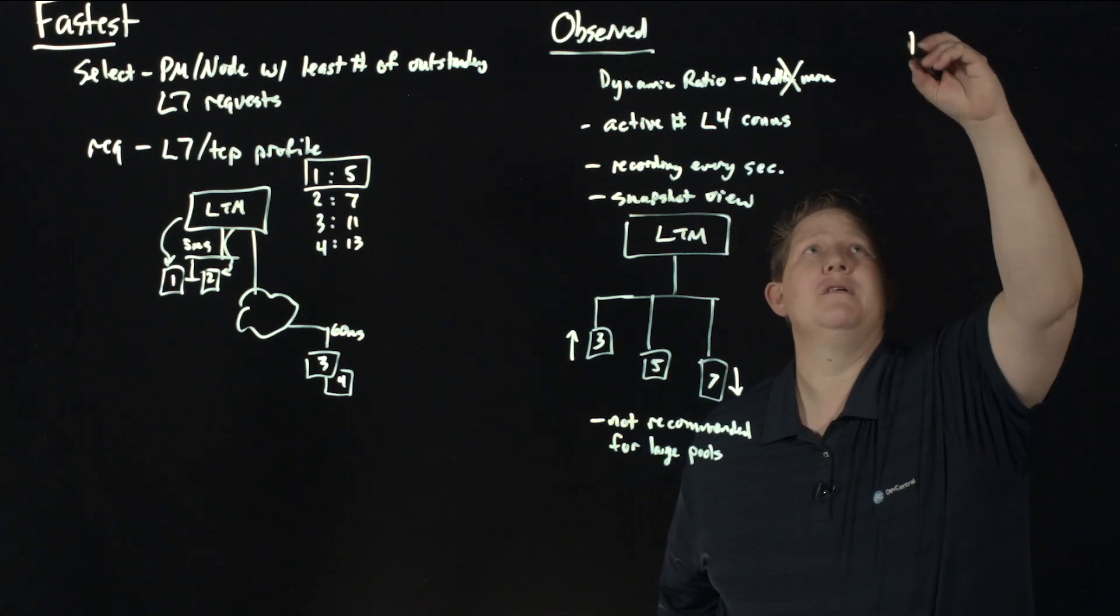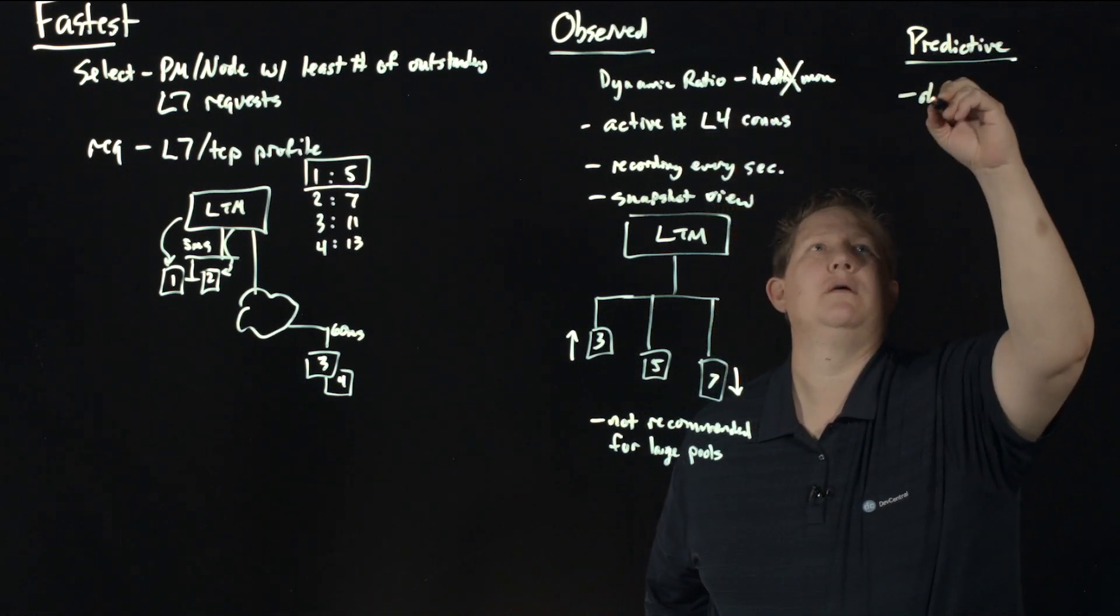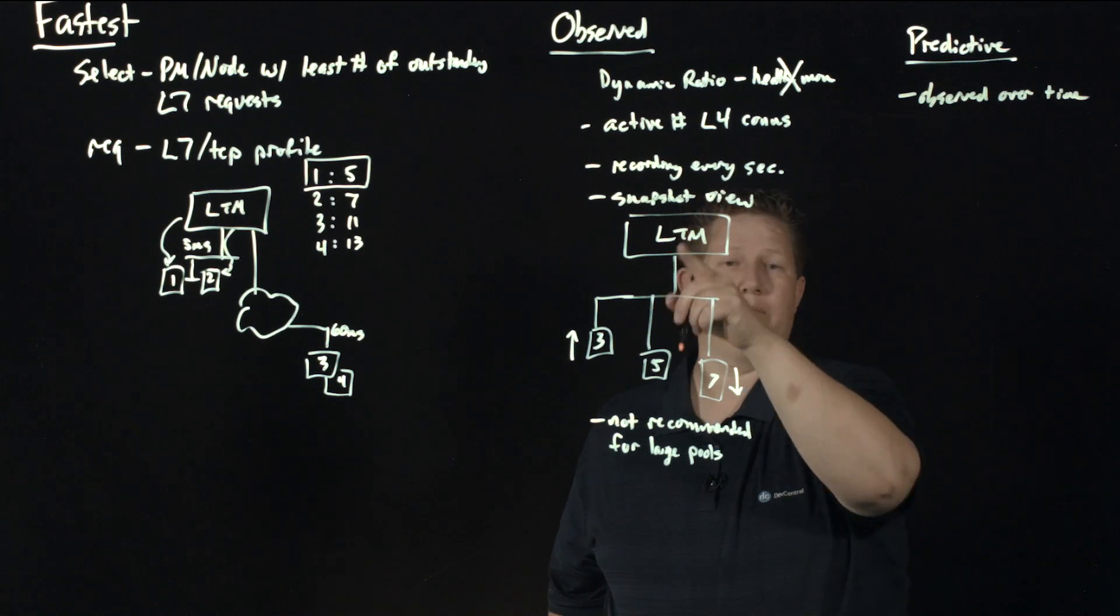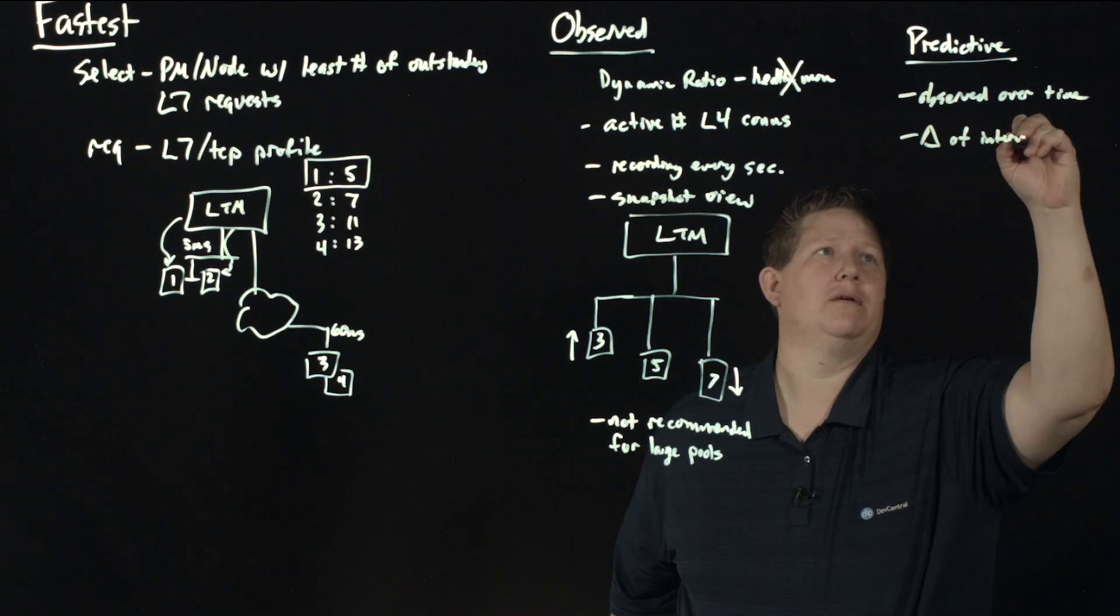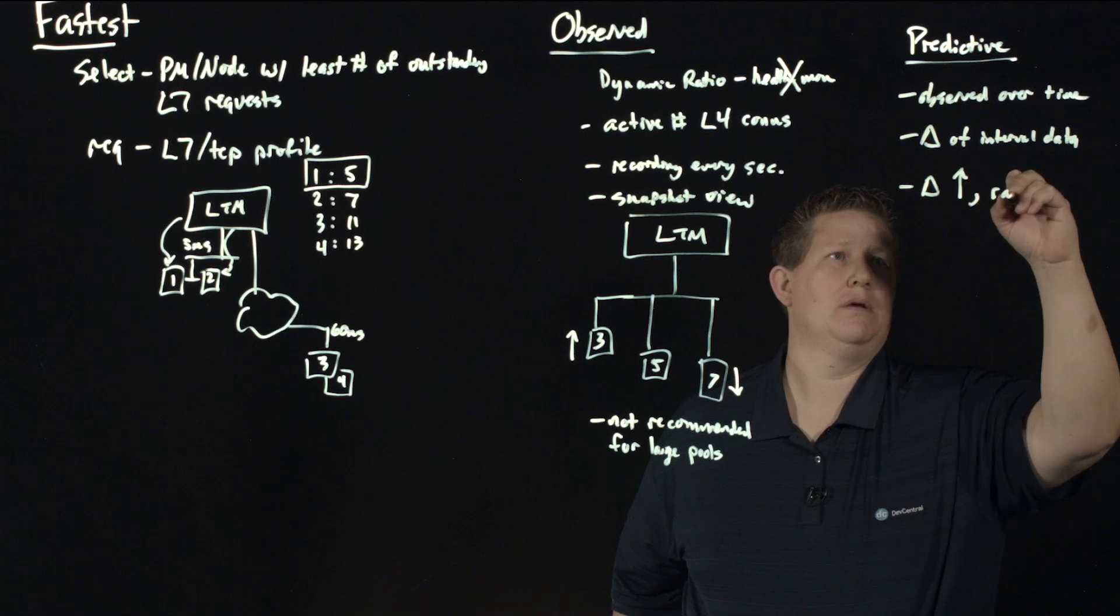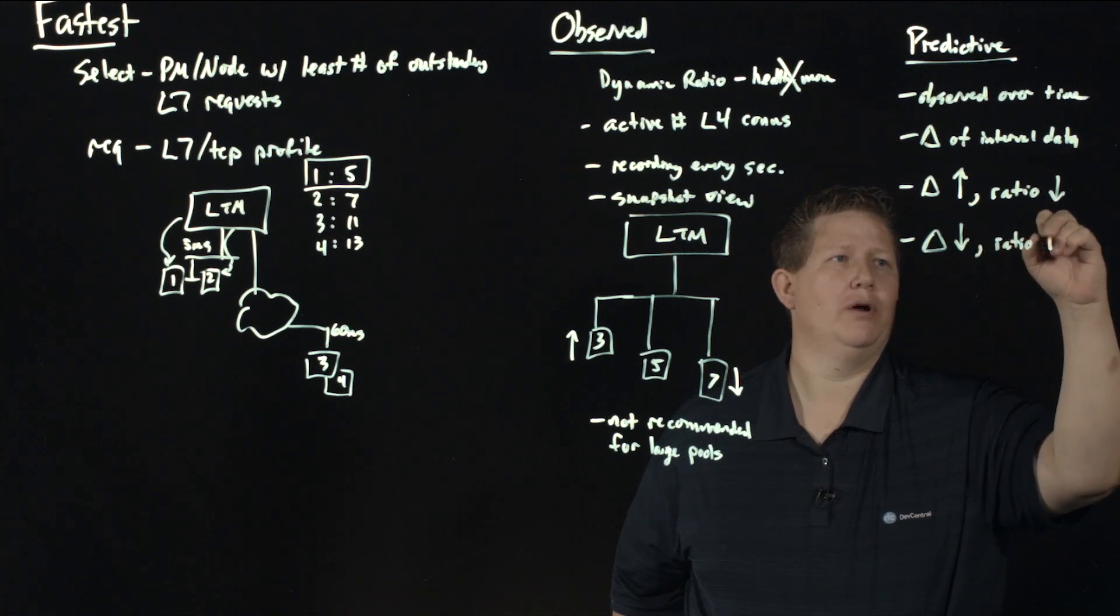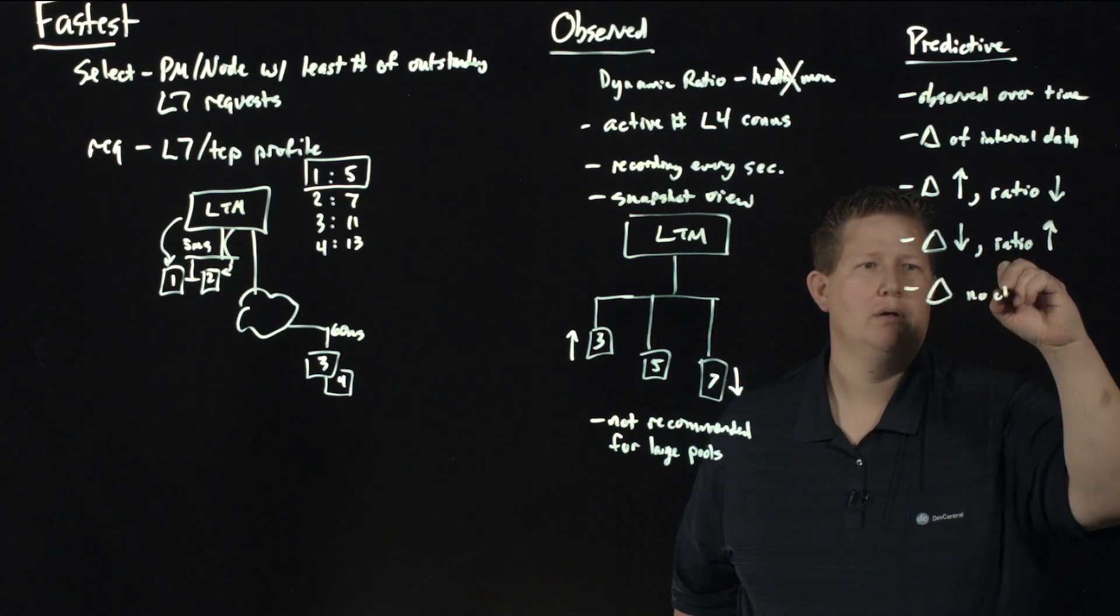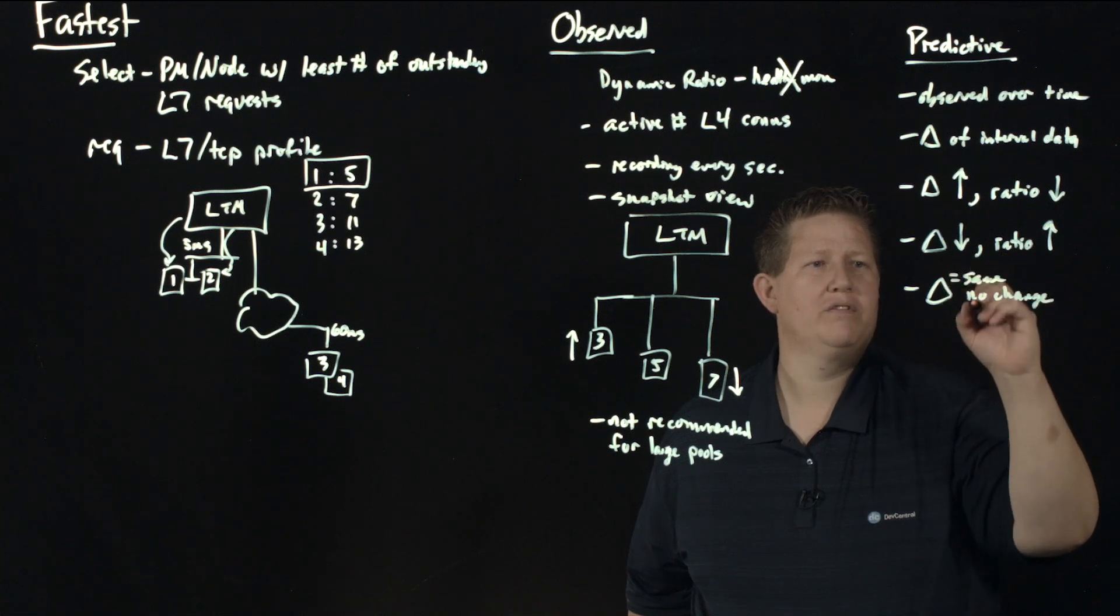Predictive is observed over time. Whereas observed is a snapshot, predictive is taking a delta of interval data. As the delta increases your ratio will decrease, and as the delta decreases your ratio increases. Delta no change both ways—if the delta is the same, if it equals same, then no change.